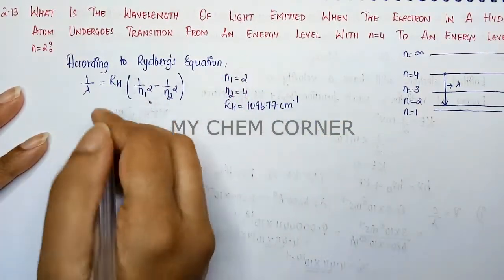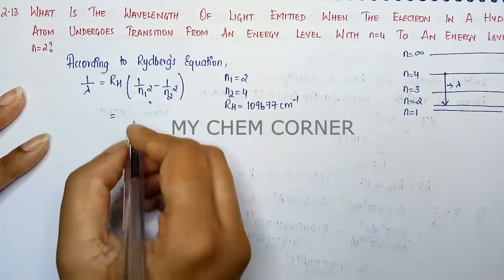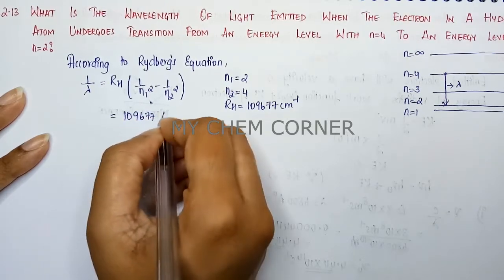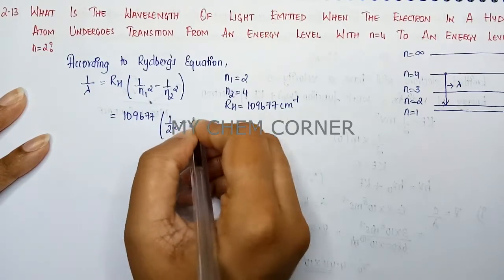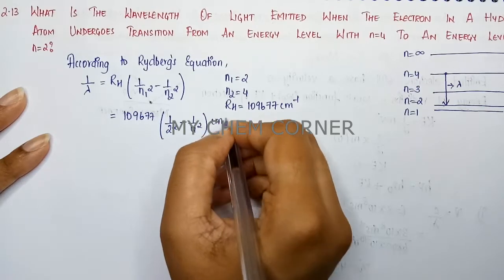Let us substitute these values. This is 109,677 into 1/n1² is 2² minus 1/n2² is 4² cm⁻¹.